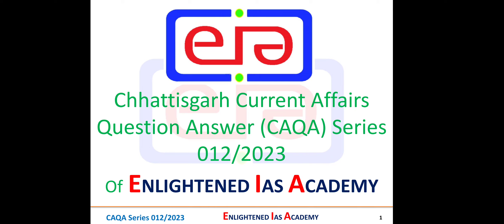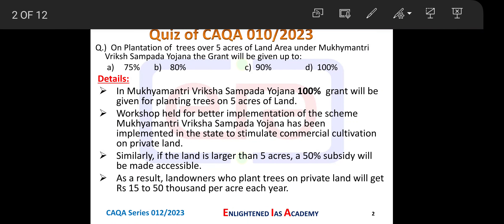In our previous video, we had given you a quiz. Let's discuss it first. The question was: under Mukhyamantri Vriksha Sampada Yojna, on plantation of trees over 5 acres of land, what is the grant percentage? Option A: 75%, Option B: 80%, Option C: 90%, Option D: 100%. Our answer is Option D — 100%. Under Mukhyamantri Vriksha Sampada Yojna, the government is giving a 100% grant.